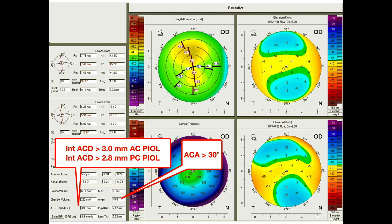Regarding the indication, the internal anterior chamber depth should be at least 3 mm if an iris-fixated phakic IOL is implanted, and at least 2.8 mm if a posterior chamber phakic IOL is implanted. But in both types, the minimum anterior chamber angle should be 30 degrees.